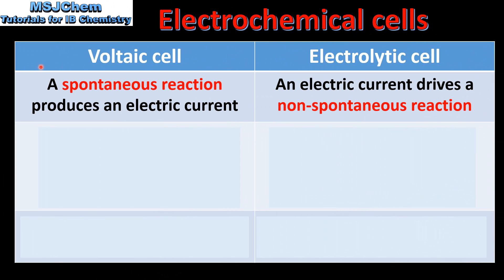We'll start by looking at whether the chemical reaction is spontaneous or non-spontaneous. In a voltaic cell a spontaneous reaction produces an electric current. In an electrolytic cell an electric current from a battery drives a non-spontaneous reaction.